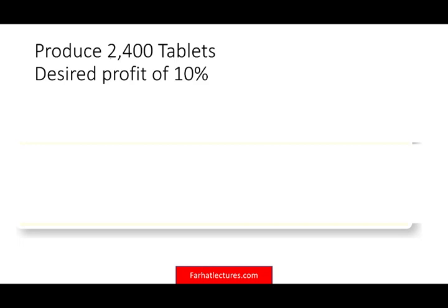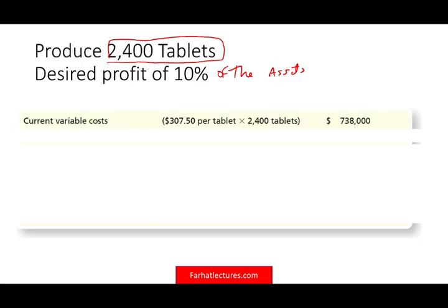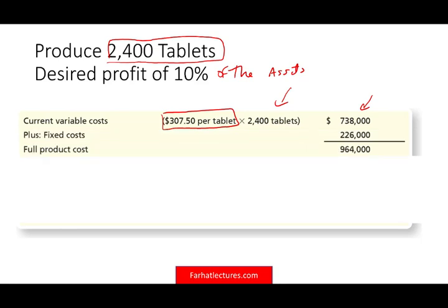We have a company that produces 2,400 tablets, and they desire a profit of 10% of assets. They want to earn 10% of their assets, which produce the tablets. Their variable cost per tablet is $307.50. They produce 2,400 tablets, so their total variable cost is $738,000. Their fixed cost is $226,000, making their full cost $964,000.